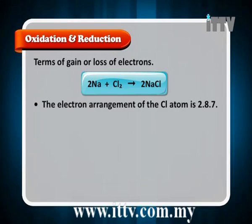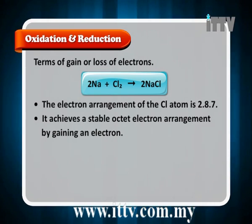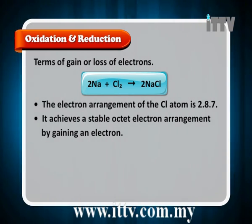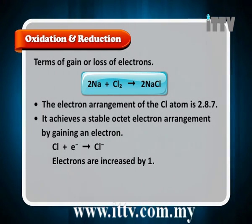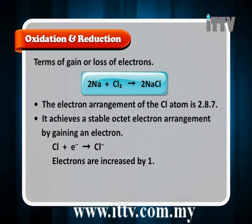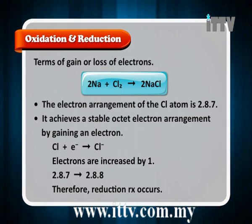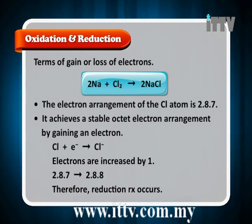The electronic arrangement of chlorine is 2.8.7. For chlorine to achieve a stable octet, it must gain one electron. Looking at the equation in the slide, chlorine gains one electron to become the chloride ion — from configuration 2.8.7 it becomes 2.8.8. Electrons increase by one, and therefore we say reduction has happened because chlorine has accepted one electron.